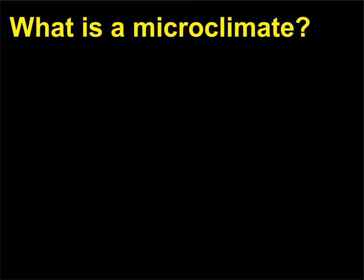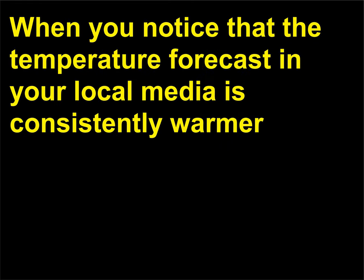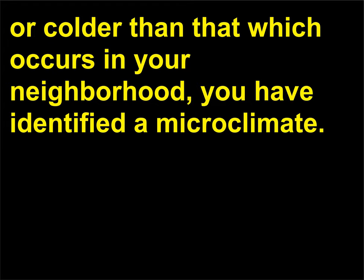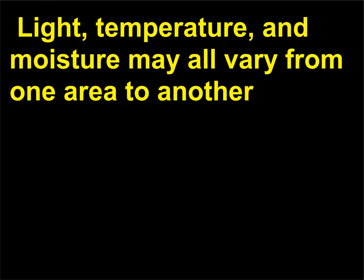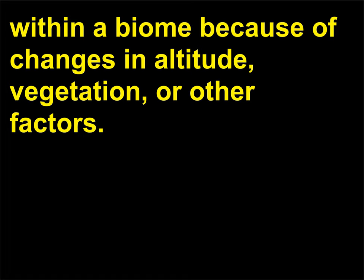What is a microclimate? When you notice that the temperature forecast in your local media is consistently warmer or colder than that which occurs in your neighborhood, you have identified a microclimate. Light, temperature, and moisture may all vary from one area to another within a biome because of changes in altitude, vegetation, or other factors.